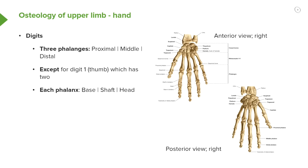Let's look at the phalanges. For digits 2, 3, 4, and 5, there are three phalanges — a proximal, a middle, and a distal. Each phalanx, just like a metacarpal, has a base, a shaft, and a head. Digit 1 only has two phalanges — just a proximal and a distal. So there we have the various bony features that make up the hand: the carpals, the metacarpals, and the phalanges.